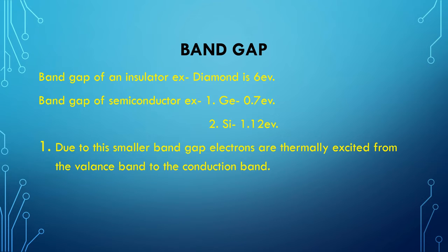The smaller band gap of semiconductors allows electrons to be thermally excited from the valence band to the conduction band, and this is the major reason for the larger electrical conductivity of a pure semiconductor compared to an insulator. Due to the smaller band gap, like 0.7 electron volt for germanium or 1.12 electron volt for silicon, electrons are thermally excited from the valence band to the conduction band, resulting in larger electrical conductivity.